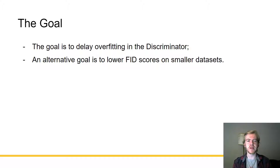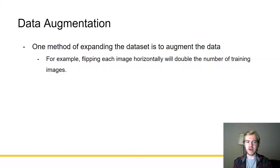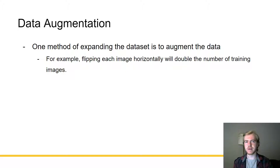Our goal is to delay the overfitting of the discriminator — an alternative goal is to lower the FID scores on these smaller datasets and improve performance overall. One way we can do this is by simply trying to expand the dataset. One method is to augment the data — for example, you can flip each image horizontally, which will double the number of training images. However, only doubling the number of training images might not be enough to successfully prevent overfitting.